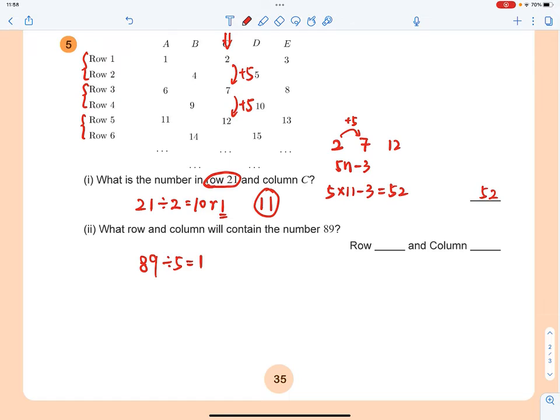89 divided by 5 gives you 17 with a remainder of 4.